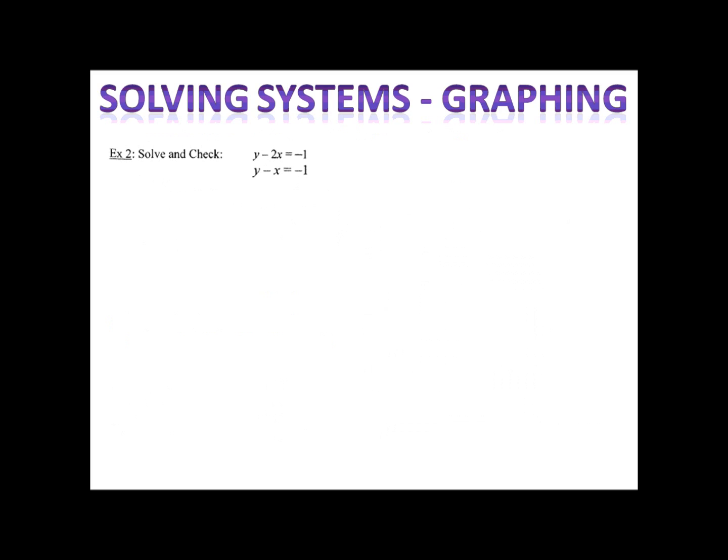Example two is for you to try. We have two equations — the first thing we need to do is put them in slope-intercept form, y equals mx plus b. Then construct the graph, find the point of intersection, and identify your solution. Once you've identified your solution, take your x and y values and plug them into the original equations to be sure that they work. Please pause the video here and then come on back — we'll see how you did.